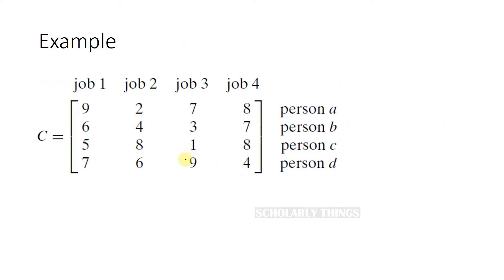Consider this example. This is the cost matrix for job 1 to 4, person A to D.